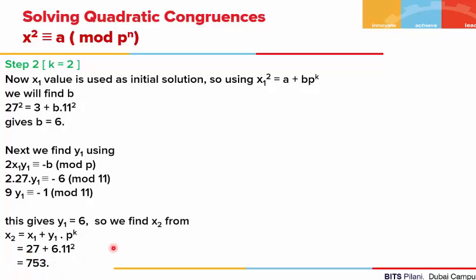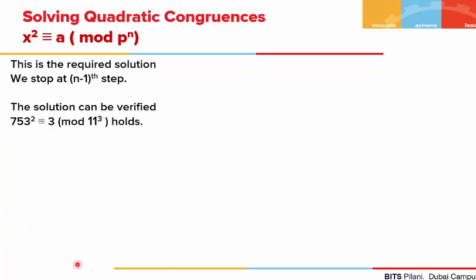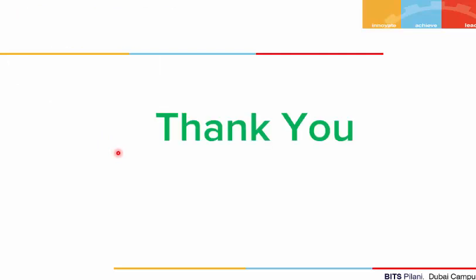So both 753 and −753 are solutions to our congruence. In two steps, we have got the final answer. We stopped at two steps because we only need to go up to the (n−1)th step. Just substitute the value 753 into your congruence and you will see it is satisfied. Thank you for watching.